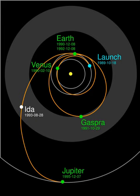The timeline of the Galileo spacecraft spans its launch in 1989 to the conclusion of its mission, when it dove into and destroyed itself in the atmosphere of Jupiter in 2003.